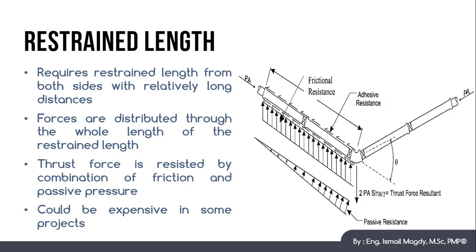So this will be the end of section number one. In the next section we will start explaining in detail the design procedure of both thrust blocks and line anchors. While restrained length calculations shall be provided separately in a free course that would be uploaded very soon. So thank you all and see you in section 2.